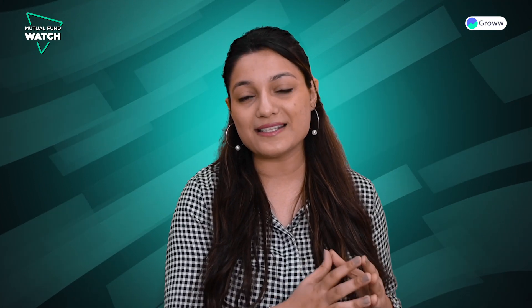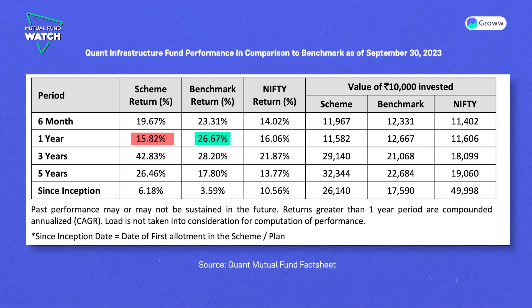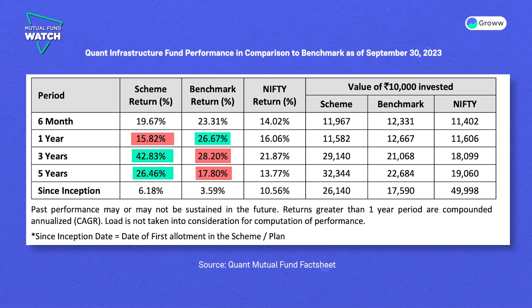Now let's see the fund's performance against its benchmark. As you can see on the screen, Quant Infrastructure Fund has outperformed its benchmark in the long term, but not in the short term. In the one-year period, the fund generated a CAGR of 15.82%, underperforming the benchmark which generated 26.67%. However, over three years, the fund generated a CAGR of 42.83%, outperforming its benchmark at 28.2%. Over five years, the fund generated a CAGR of 26.46%, outperforming its benchmark at 17.8%.